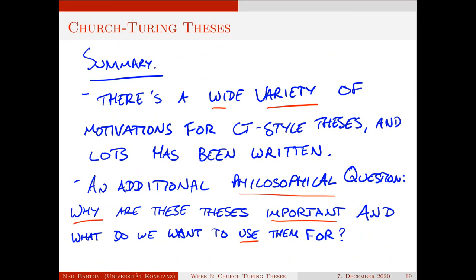Just to summarize: there's a really huge variety of motivations for Church-Turing style theses, lots has been written, it's a really interesting literature, and I suggest everybody read more about it. I do think there are additional philosophical questions we can ask — some have begun to be addressed, for instance in the work of Shapiro concerning conceptual change — as to why these theses are important and what we want to use them for. So beyond the standard philosophical discussion about identifying the classes, I think there's a really important separate question of what we are trying to accomplish by assuming these theses, particularly in terms of the kind of mathematical and logical practice that we engage in. Thanks for listening.